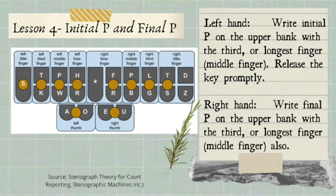Now we're on to lesson four: initial P and final P. With your left hand, write initial P on the upper bank with the middle finger and then release the key promptly. Then on your right hand, write final P on the upper bank with the middle finger also. So initial P is left middle finger, and final P is right middle finger.